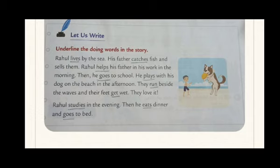They run beside the waves and their feet get wet — run and get are doing words. They love it — love is also an action word. Rahul studies in the evening — studies. Then he eats dinner and goes to bed — eats and goes. I forgot to underline sells and love, so please underline those words also. Learn these exercises and the meaning of verbs or doing words, and do it neatly and correctly in your book.